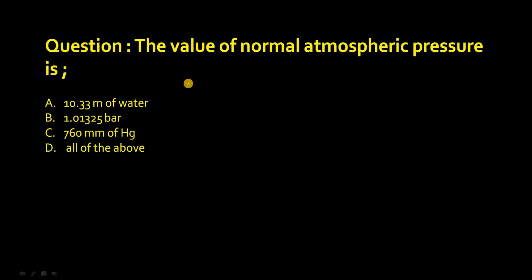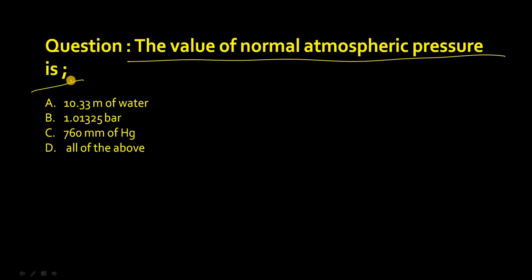Now here is a question for you all: the value of normal atmospheric pressure — a very, very simple question. The four options are: 10.33 meter of water; 1.01325 bar; 760 mm of Hg; or all of the above. Please let me know in the comments box what will be the right option.